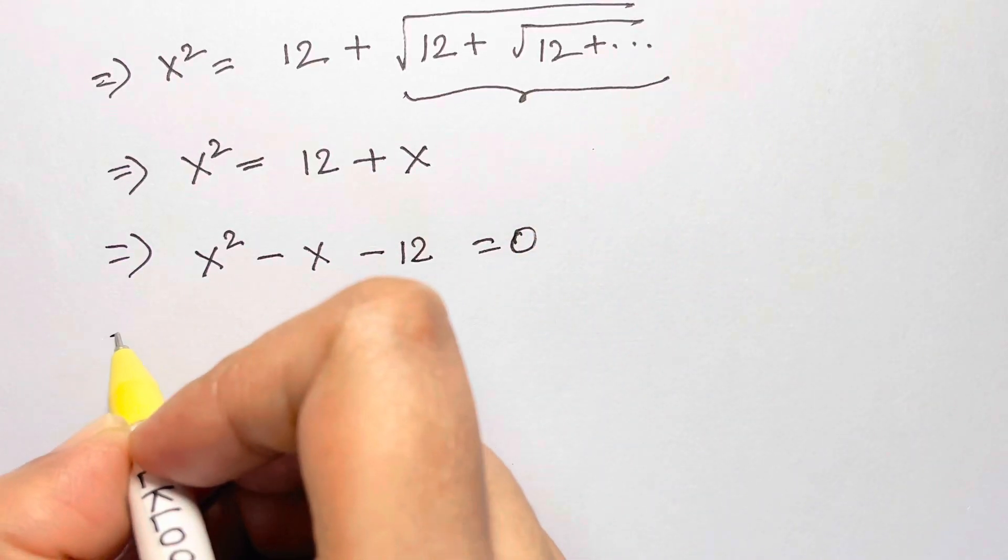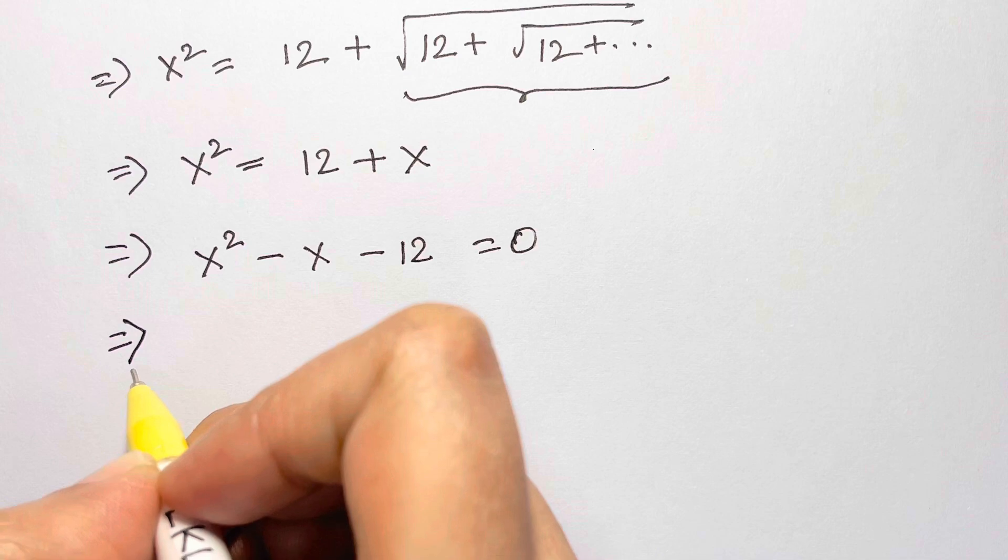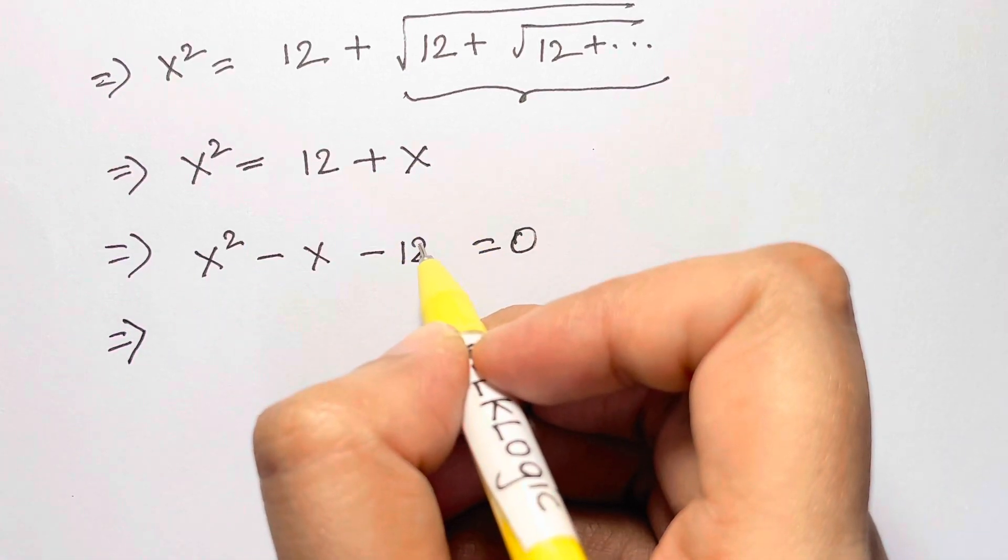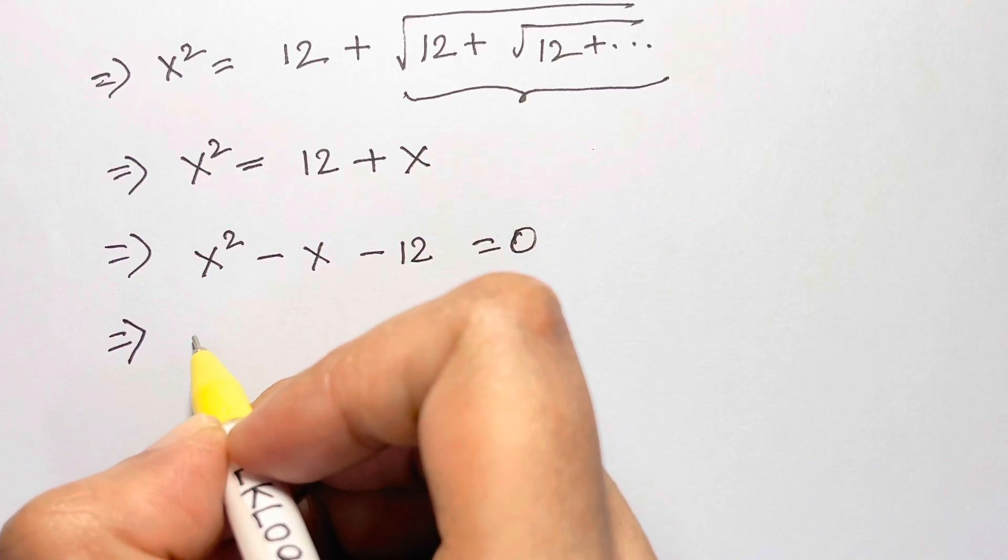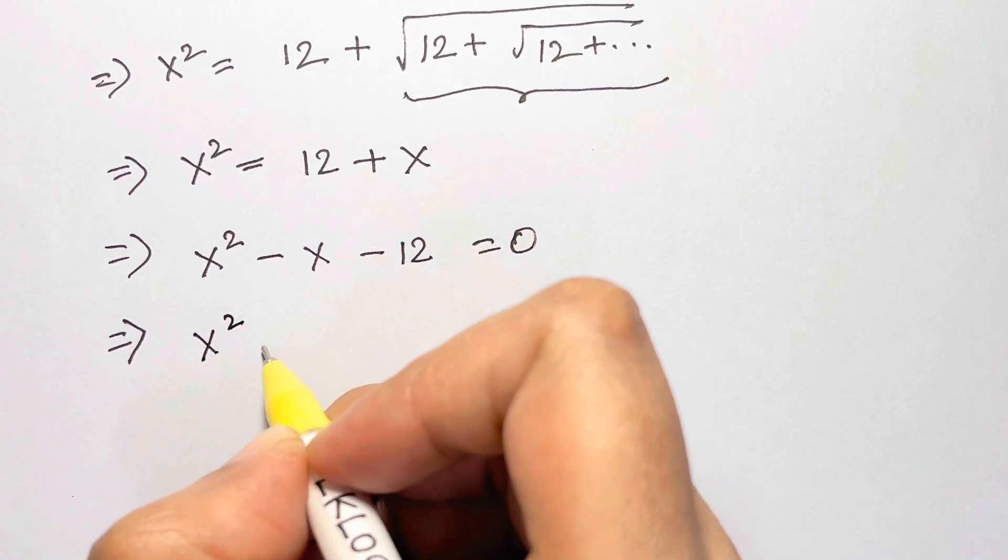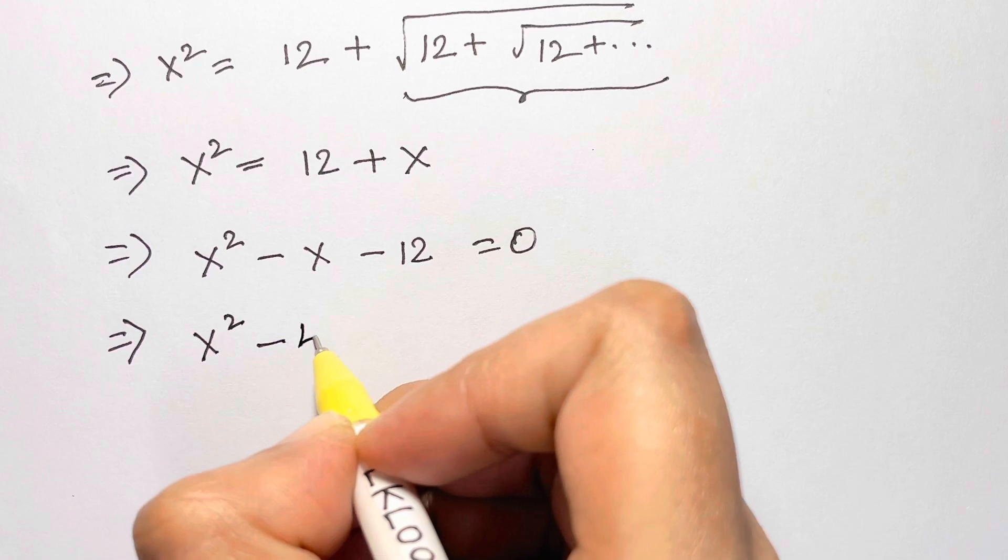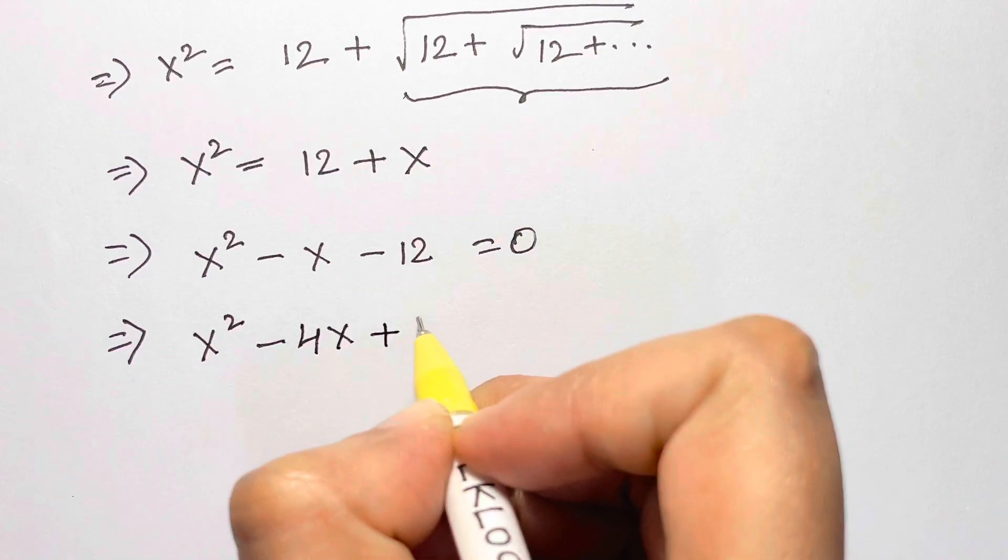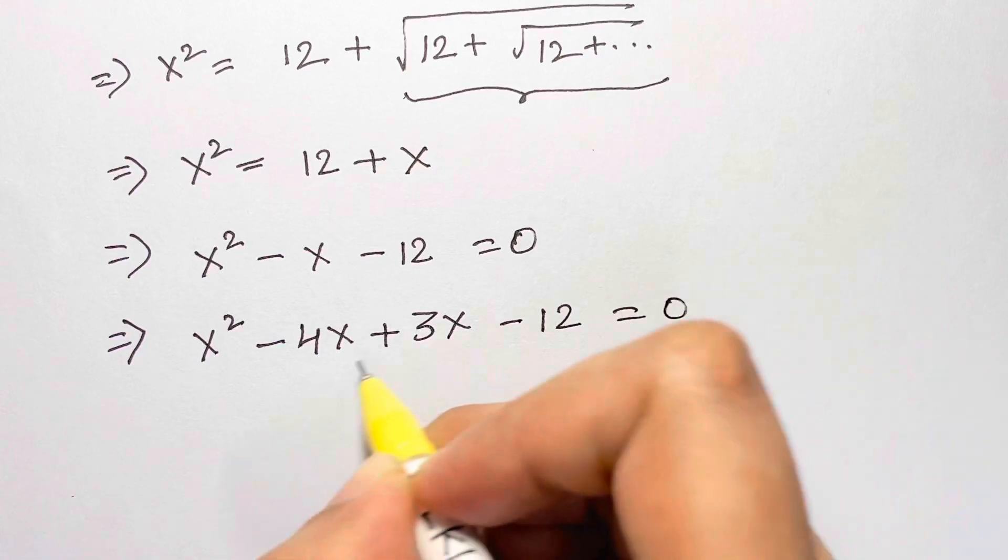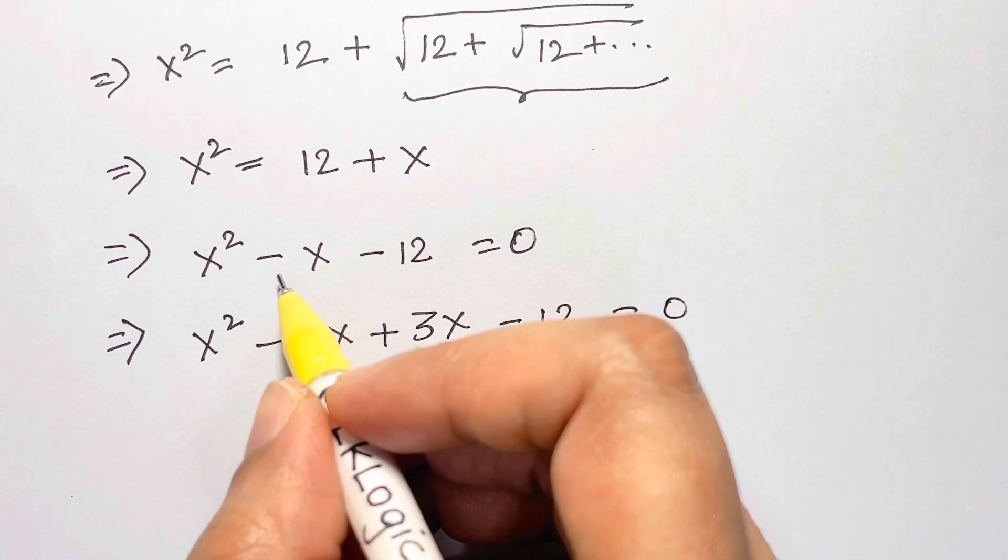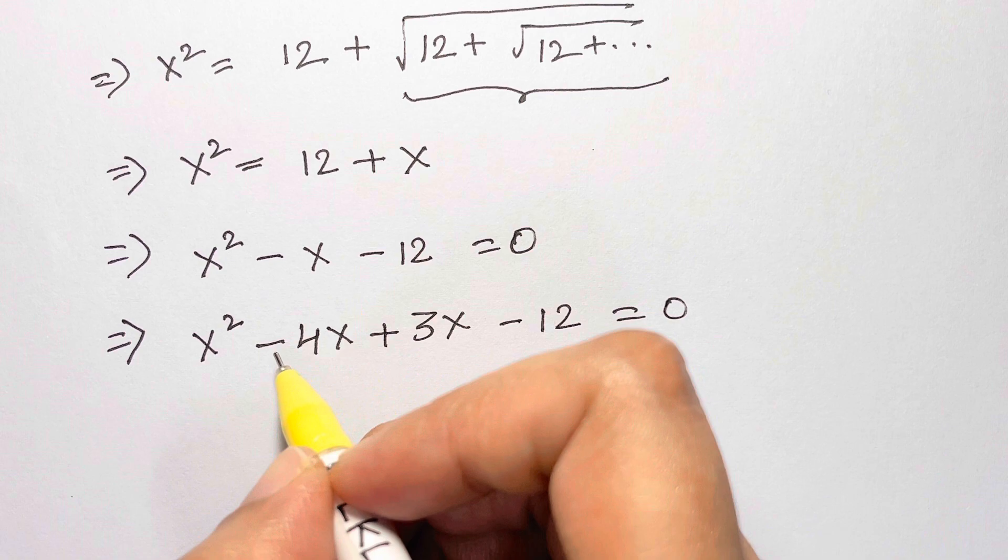Now it's a quadratic equation. We can use the product sum rule to simplify. Your product should be negative 12 and your sum should be negative one. So we can take x squared minus 4x plus 3x minus 12 is equal to zero.